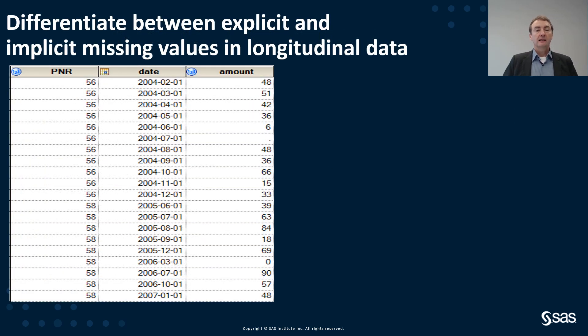It is therefore important to differentiate between the explicit and the implicit missing value in longitudinal data or more precisely to differentiate between missing records and missing values. If you take a look at the data that you see here, it's quite obvious that here a value is missing. It is a missing value. The record exists, but there is no value.